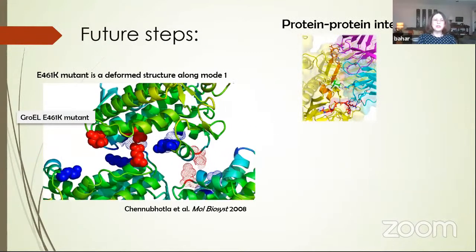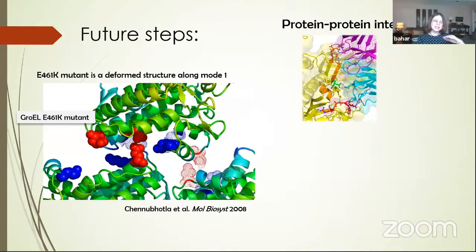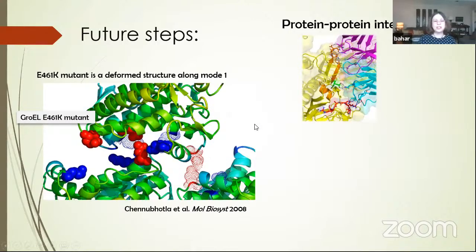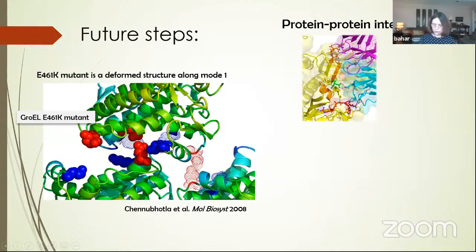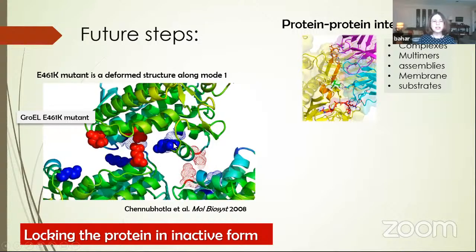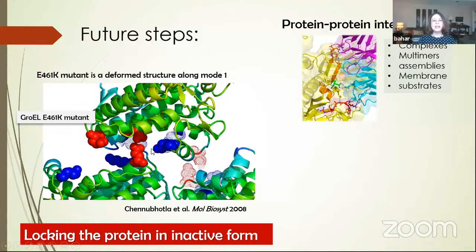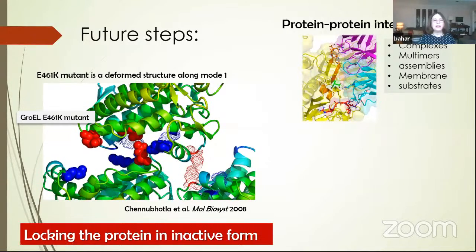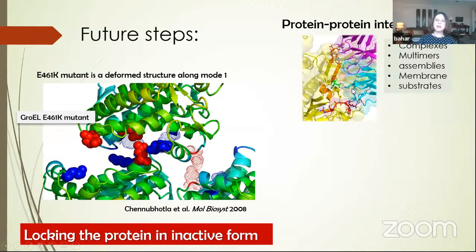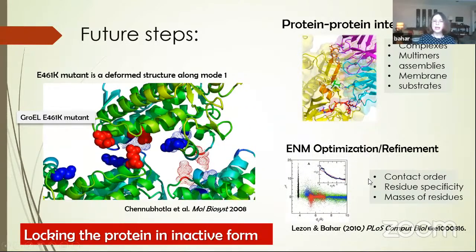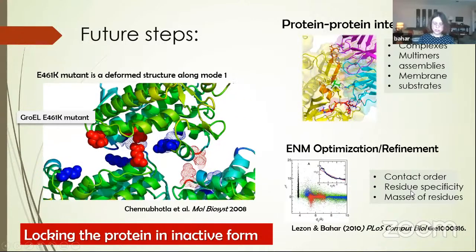A quick summary: including dynamics in addition to sequence and structure helps better assess the impact of mutations. We could do that because we used elastic network models, whose outputs can be easily plugged into machine learning classifiers. We can go back and understand exactly what is the molecular origin of the observed score. There is still a lot to do — as you add more features, the improvement in performance becomes smaller and smaller. Features we haven't yet incorporated include focusing on specific motions, how the vicinity of a given amino acid changes during a global mode, protein-protein interactions from the PDB, oligomers, interactions with membrane or small molecules, and improving ENM force constants to depend on contact order and residue specificity.